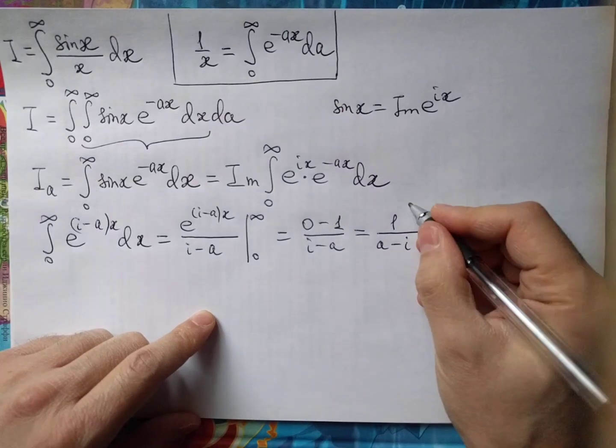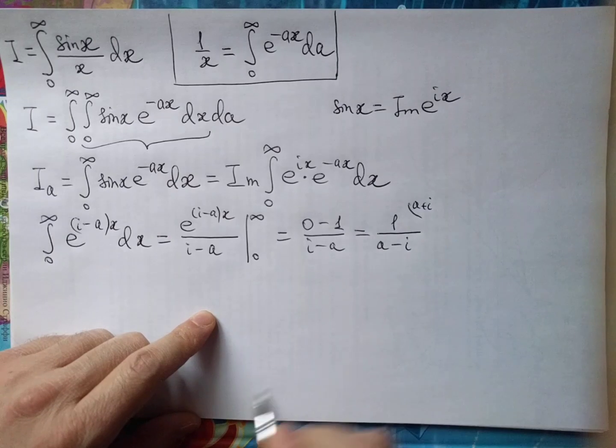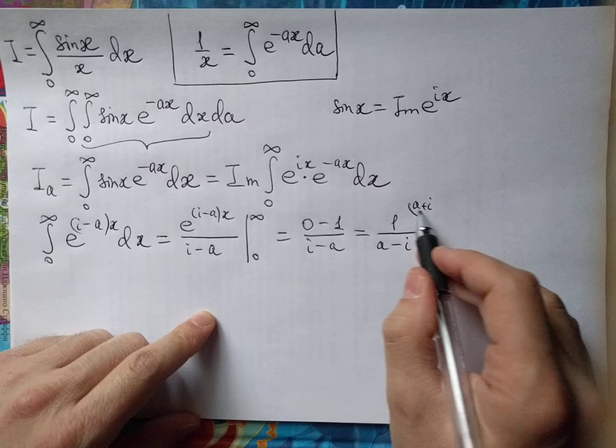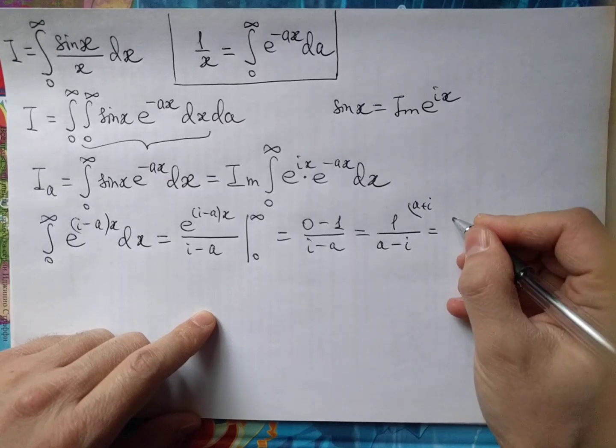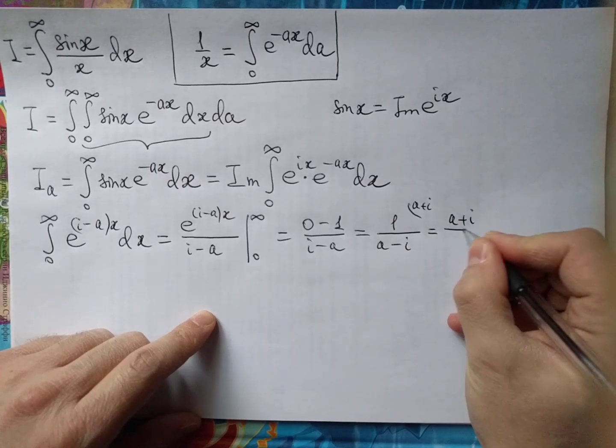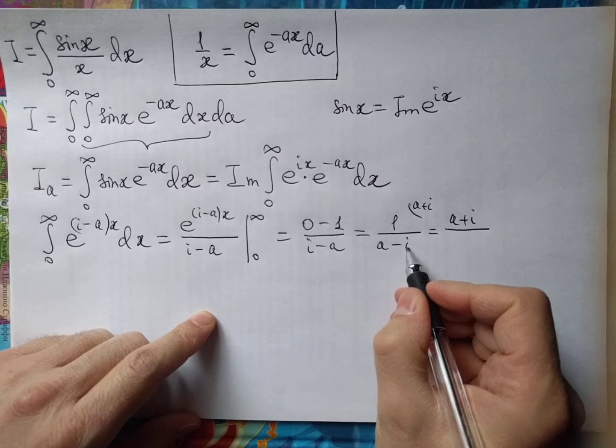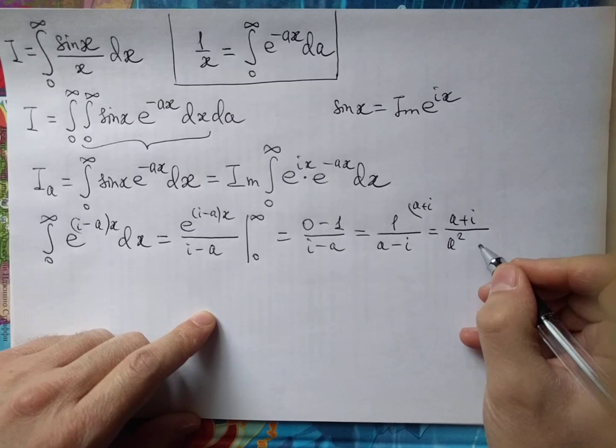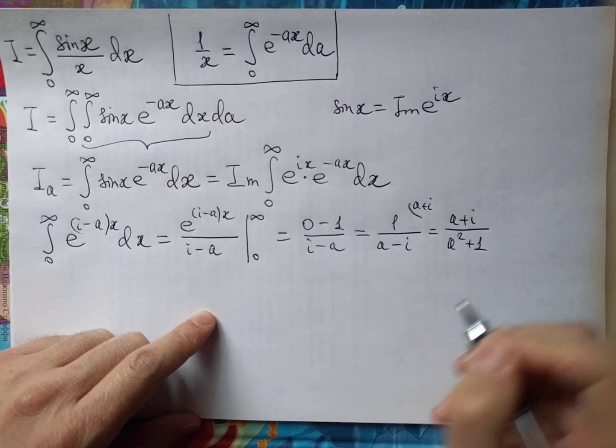One more operation: let's multiply both numerator and denominator by this expression. a minus i times a plus i equals a squared plus 1.